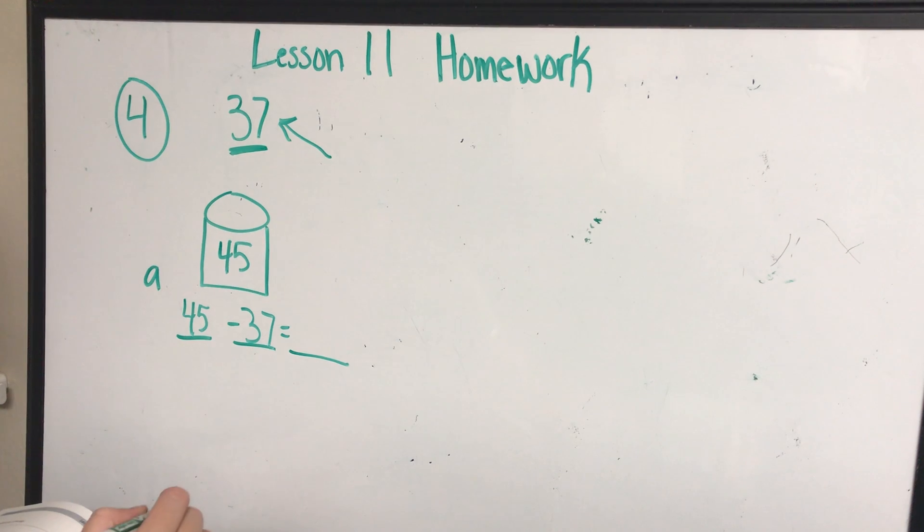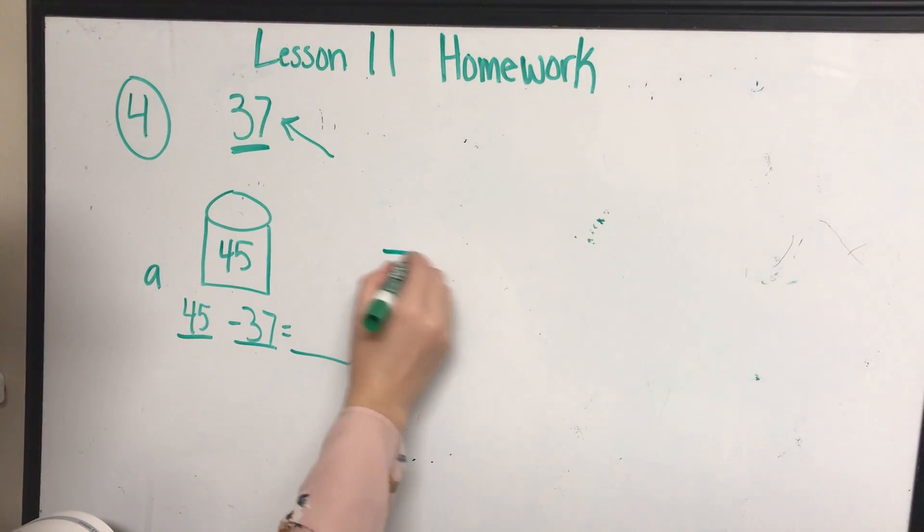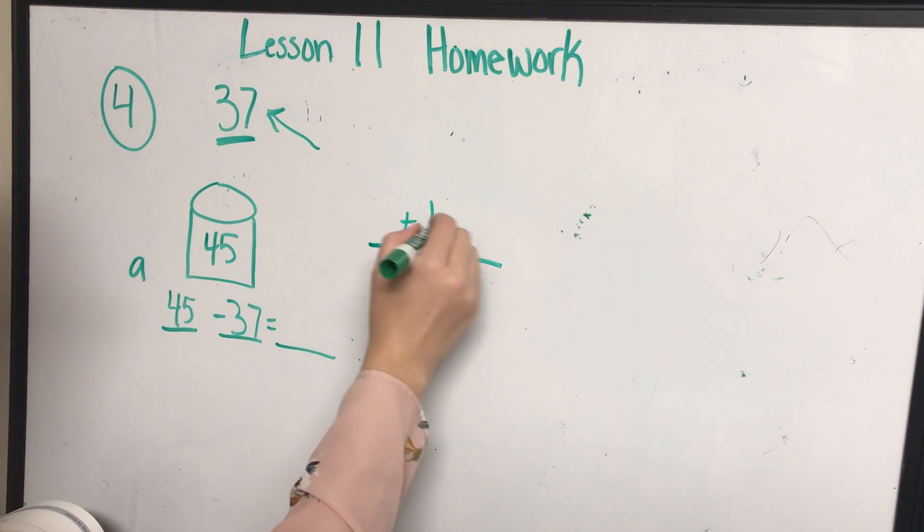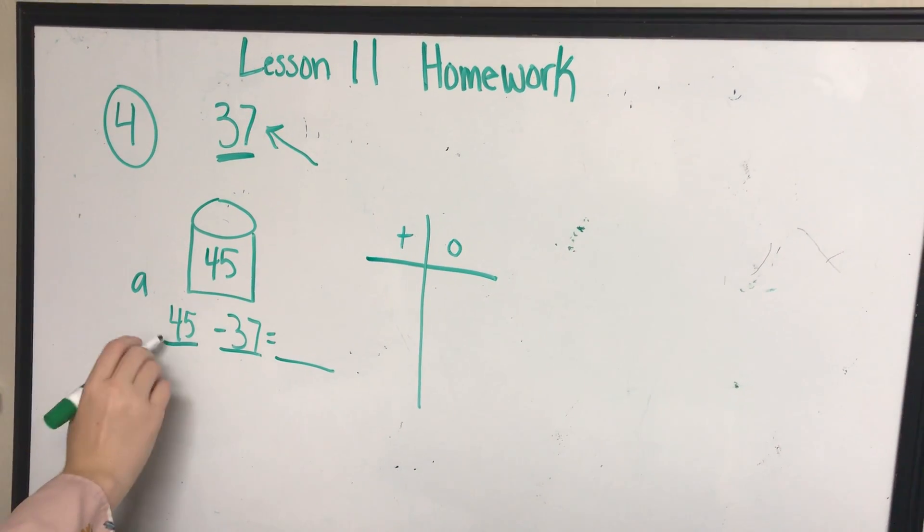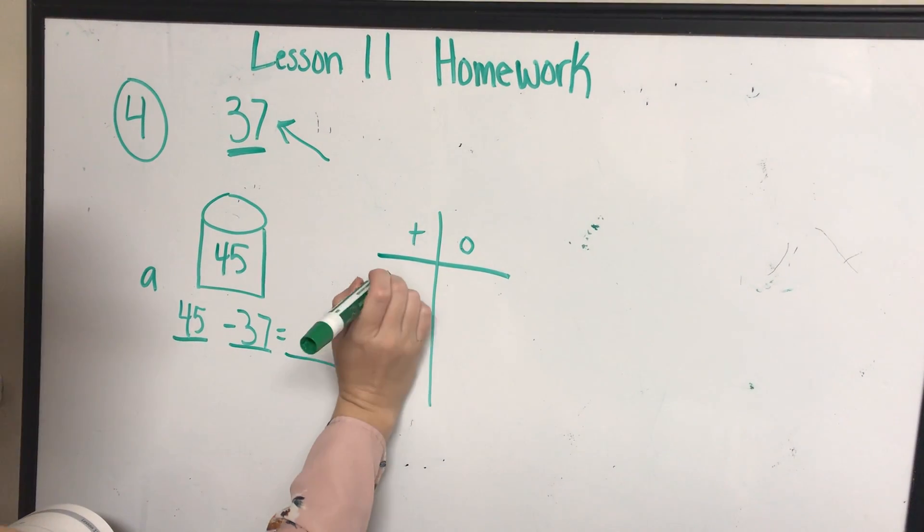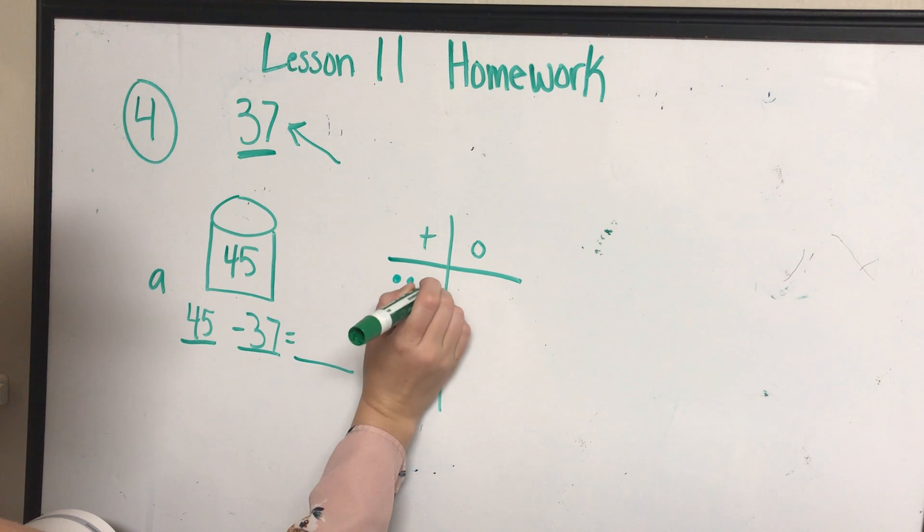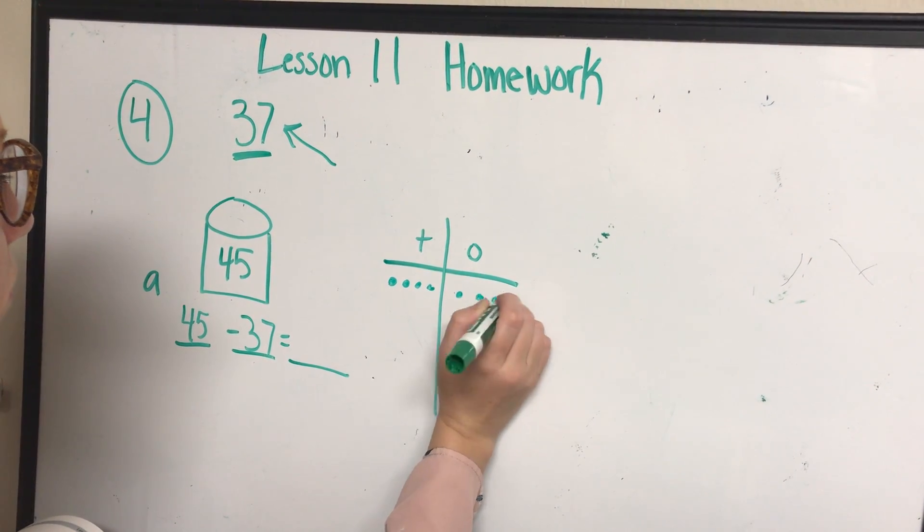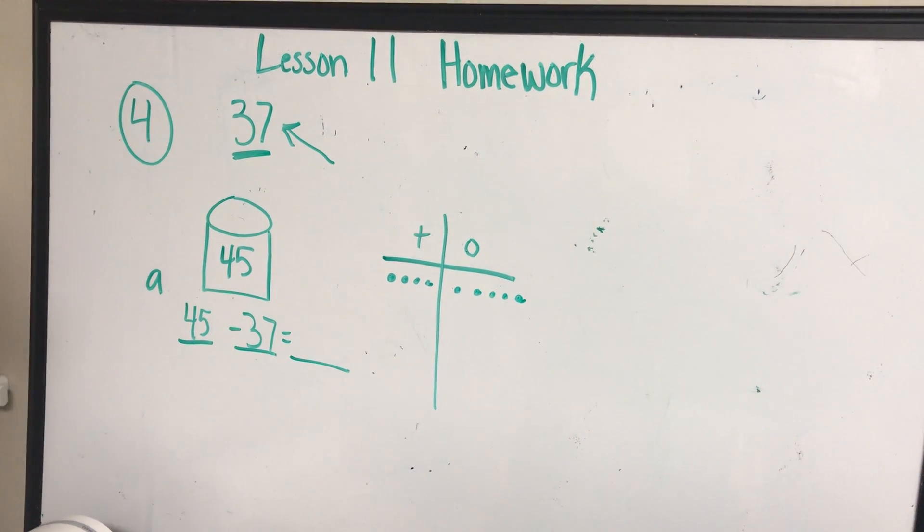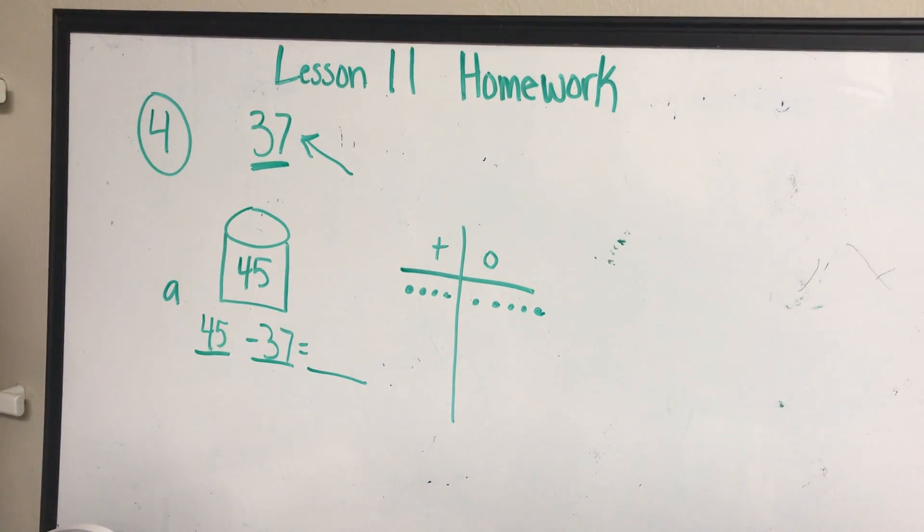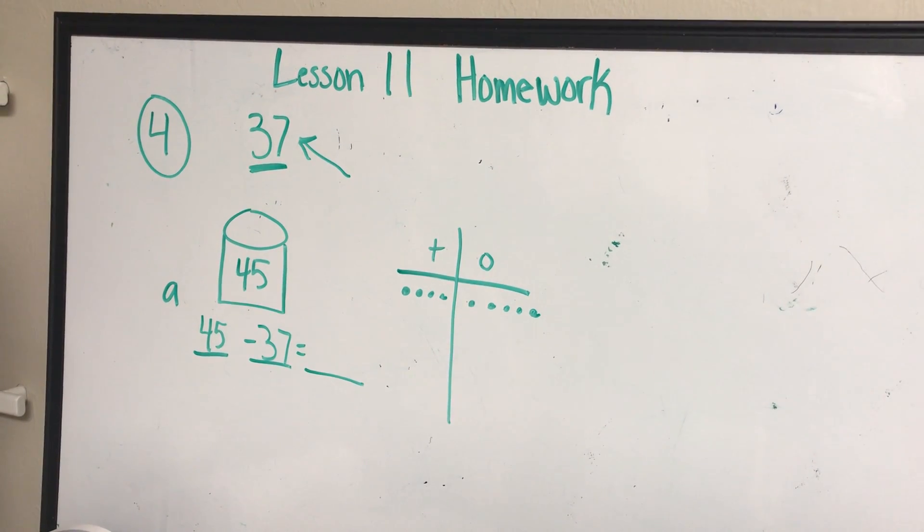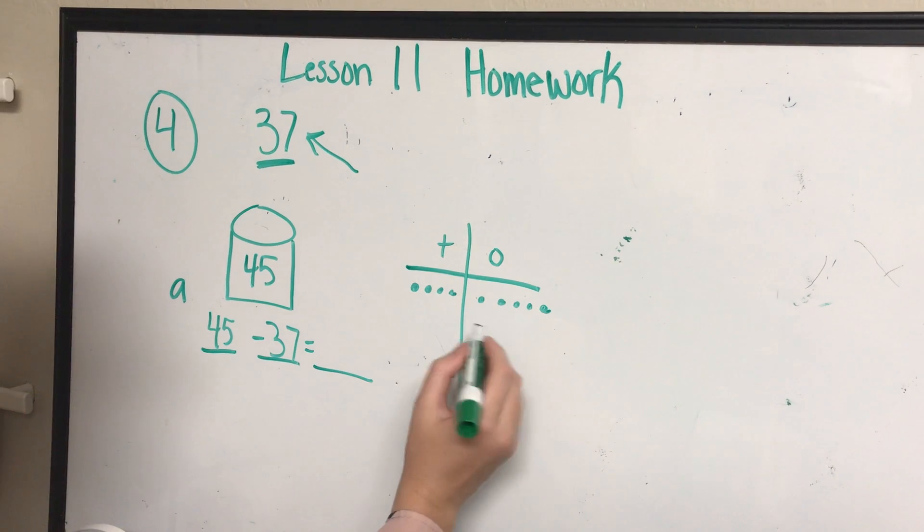So somewhere on my paper, maybe even an extra sheet of paper, I'm going to draw my tens and ones chart. I'm going to draw what number first? My first number first, so my 45. Remember, we are subtracting now, so it gets different. Can I subtract my seven ones? No, I cannot subtract my seven ones. Because I only have five there, I'm going to have to take away, pull over.